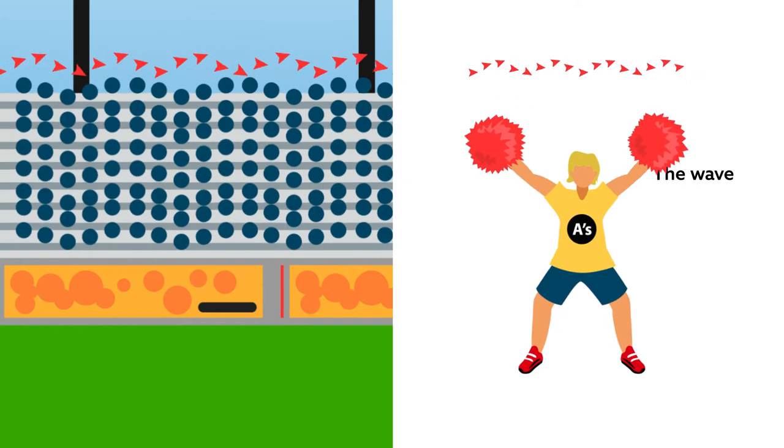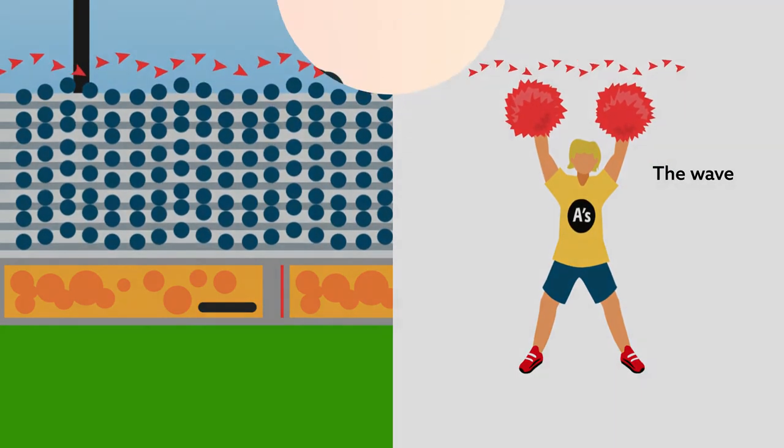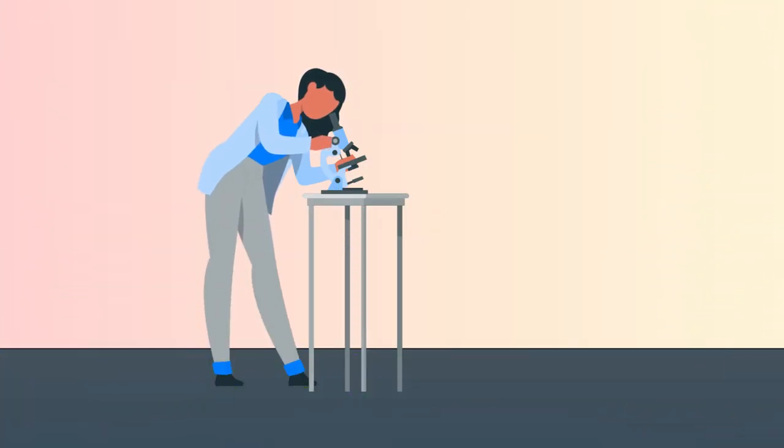Unlike a typical wave, waves like this are metachronal, meaning they're produced by sequential action. Metachronal waves are found almost everywhere, often as a means of transport.